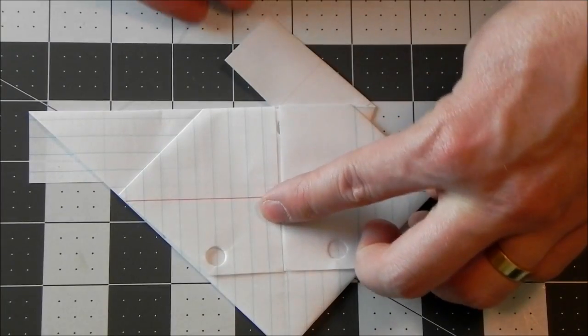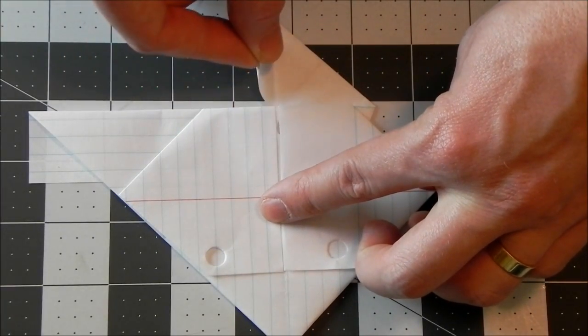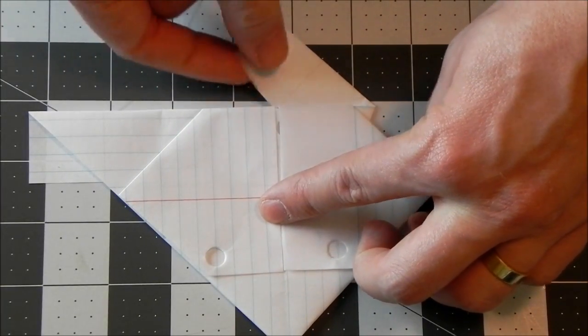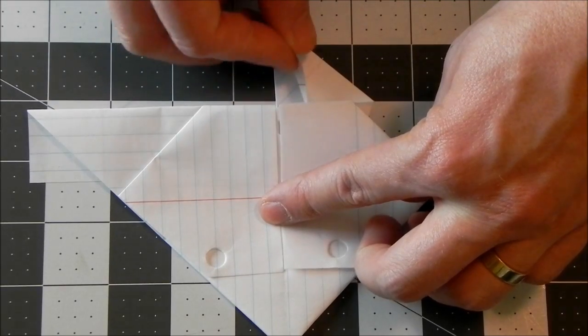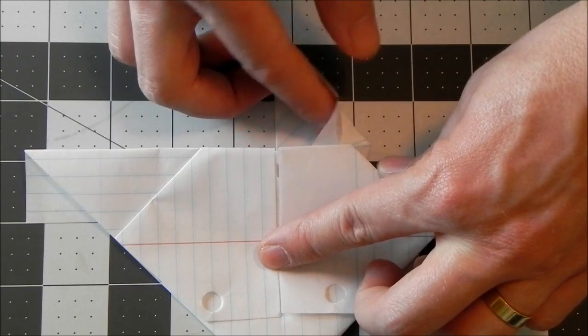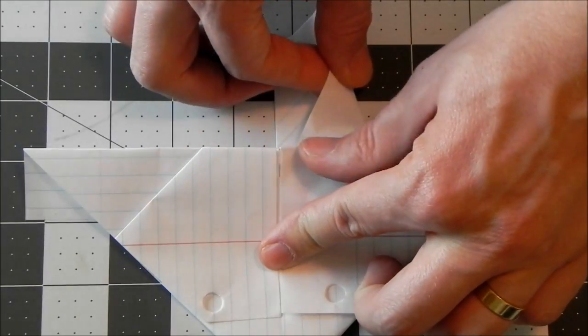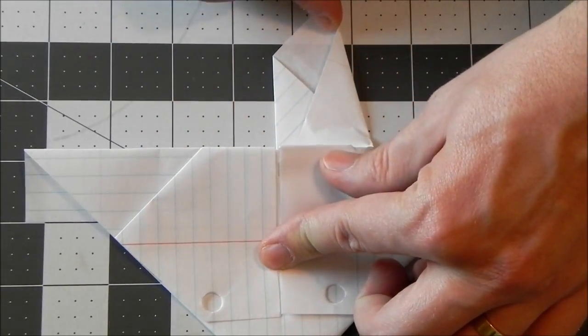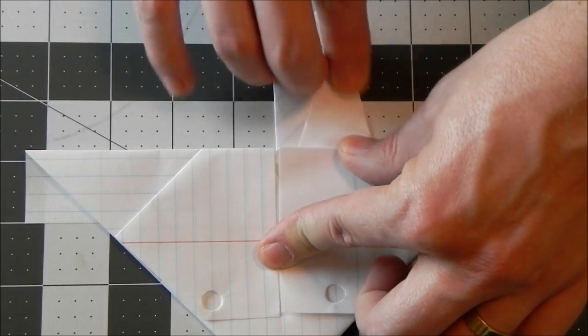You can see the ear is kind of off center. So what you'll do is just grab this pointy edge here and you're just going to gently pull it out and you're going to see that the paper is going to want to come out of there.